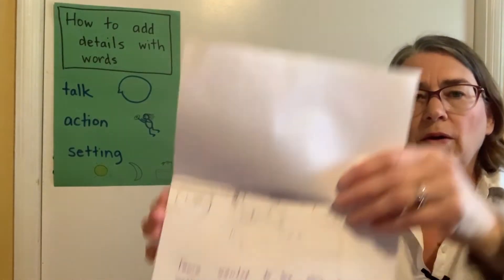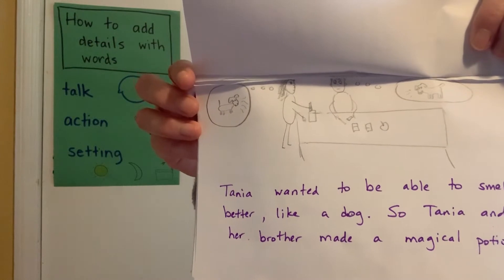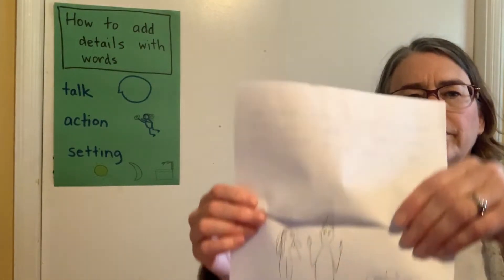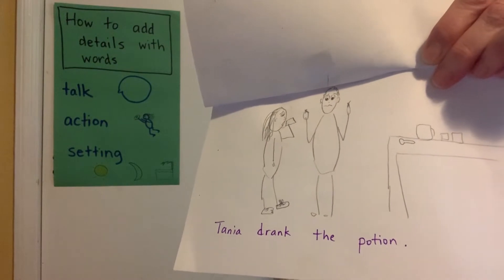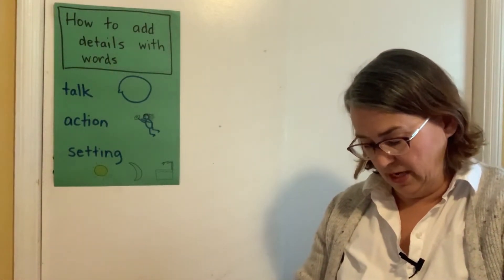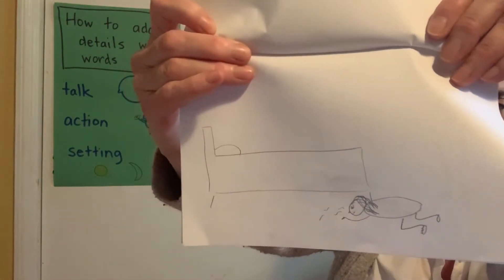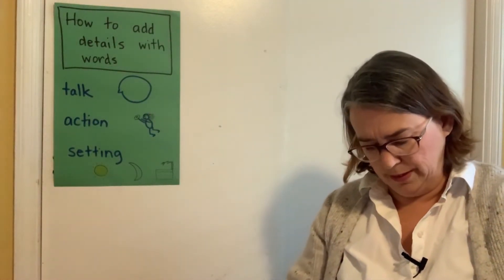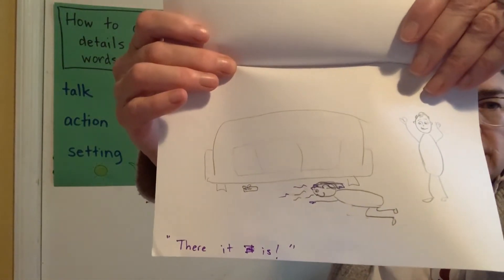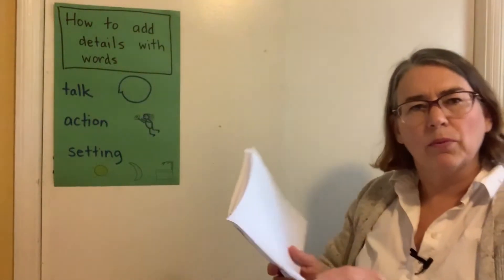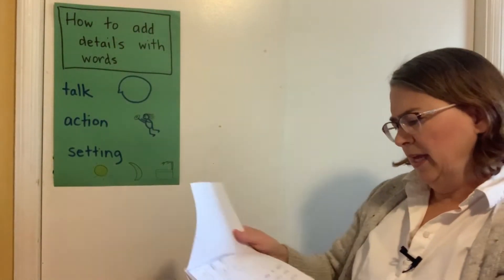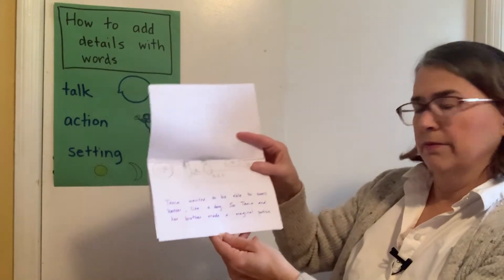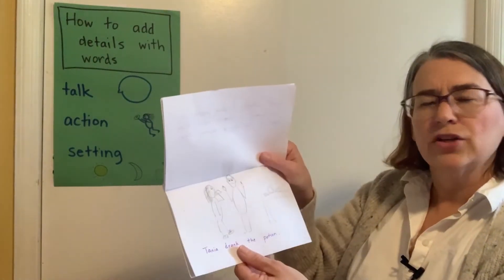I added a lot of details to the picture on that page — you can see I'm showing them thinking about dog smell. But I didn't do much with the next page. It says 'Tanya drank the potion.' And then the next page I didn't write any words yet. I just show her looking under the bed for the sneaker, but it's not there. Then I have her looking in one more place — this is the couch — and then I just wrote 'There it is.' So I need to add more to that, I think.